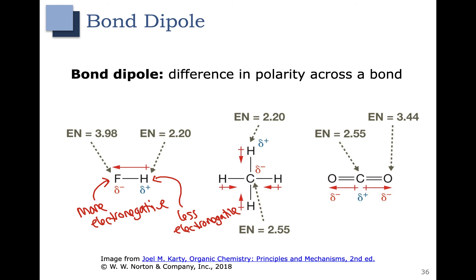Let's look at methane, CH4. Remember, the carbon-hydrogen bond wasn't considered polar covalent, so we use a small arrow to show a very slight difference in polarity. It's not significant enough to be a polar covalent bond, but we are showing the direction of the polarity across that bond.